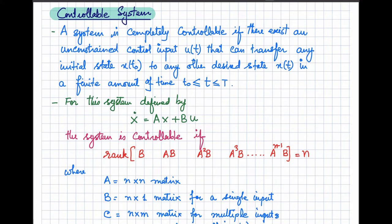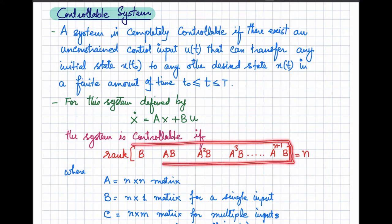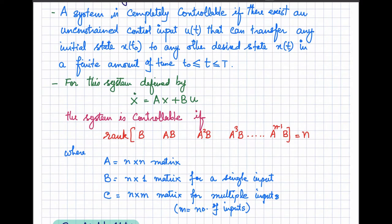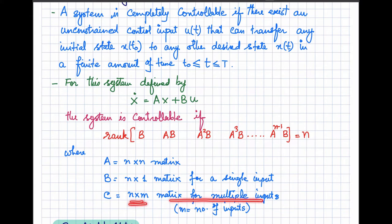Assuming the state space representation of a system, this system will be controllable if the rank of the controllability matrix is equal to n, where n is the order of matrix A. Matrix A is obtained from the state space and its order is n×n. Matrix B is the input matrix; its order is n×1 for a single input and n×m for multiple inputs, where m is the number of inputs.